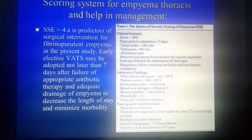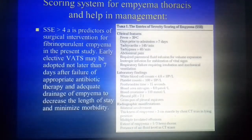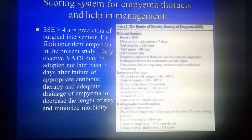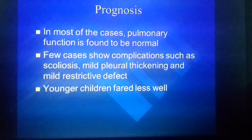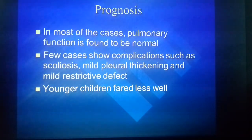Scoring system for empyema thoracis: severity scoring of more than 4 is important for intervention in fibrinopurulent empyema. Early effective VATS may be adopted no later than 7 days after failure of appropriate antibiotic therapy and adequate drainage, to decrease length of stay and minimize morbidity. Prognosis depends on pulmonary function and may lead to complications like scoliosis, pleural thickening, and mild restrictive defect.